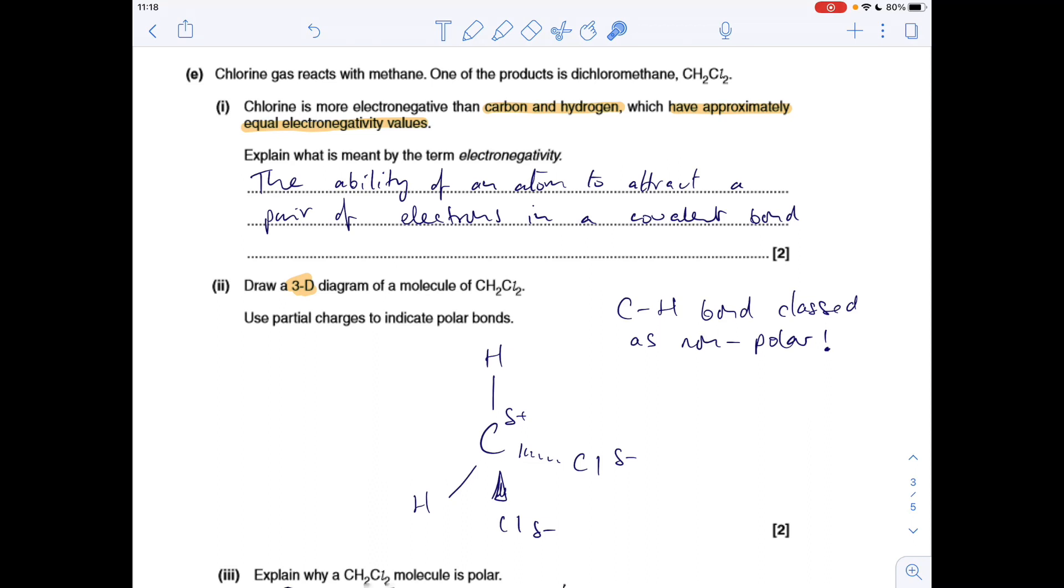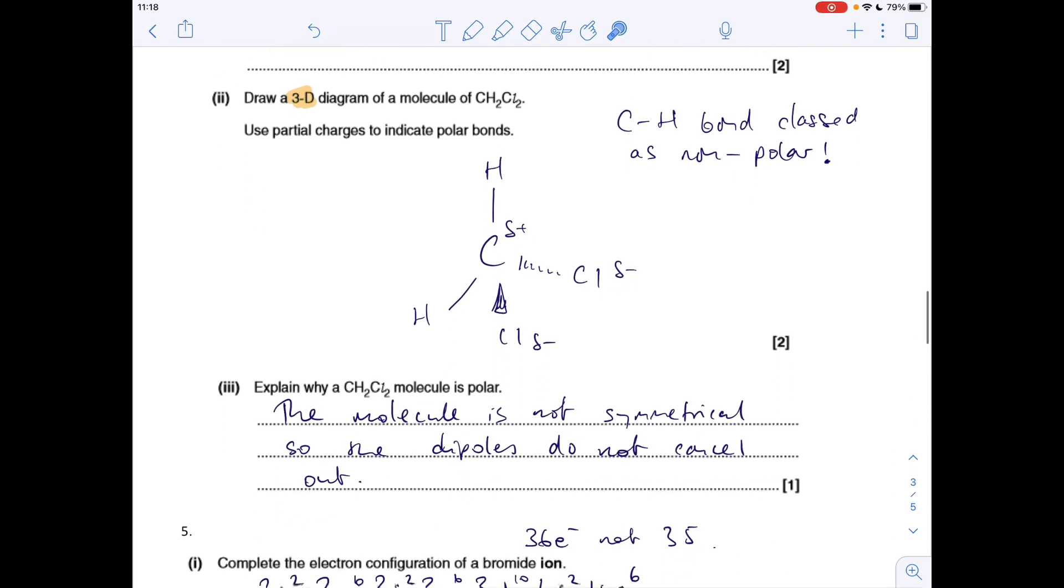Because of that, the CH bond is classed as non-polar, so they don't want to see a dipole on this bond. The delta plus needs to be on the carbon, not on the hydrogens. Delta plus on the carbon and the delta minuses on the chlorines. Explain why that molecule is polar. We just need to say that the molecule is not symmetrical, and it's not symmetrical obviously because these are different atoms to these, and therefore the dipoles don't cancel. So there's an overall dipole left on this molecule.